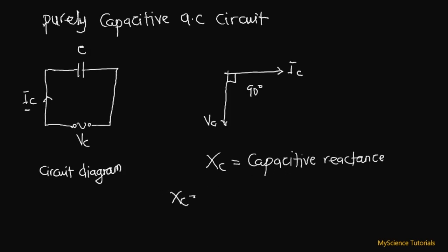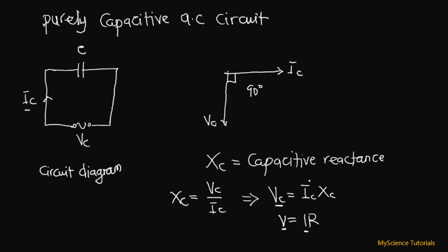The capacitive reactance Xc is given mathematically as the ratio of capacitive voltage to capacitive current: Xc = Vc / Ic. If we make voltage the subject, we get Vc = Ic × Xc. This looks like Ohm's law for direct current — V = IR — where the capacitive voltage replaces V, capacitive current replaces I, and capacitive reactance replaces resistance R.